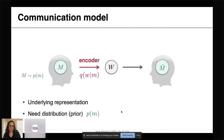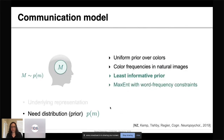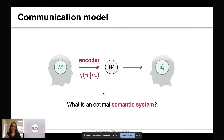To instantiate this model, we need to specify the underlying representation of the domain and a need distribution or prior over possible elements reflecting how often they are needed in natural communication. We systematically evaluated several methods, and the results shown today are based on the notion of least informative priors. Now, given this communication model, we can ask what would be an optimal semantic system. By semantic system I mean an encoder — equivalent to a naming distribution, which is a probability of words given elements we're trying to communicate. According to the information bottleneck principle, optimal systems should optimize a trade-off between complexity and accuracy, where complexity is measured by the mutual information between M and W.